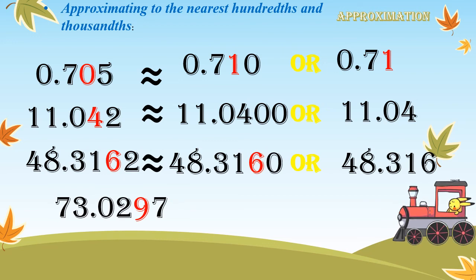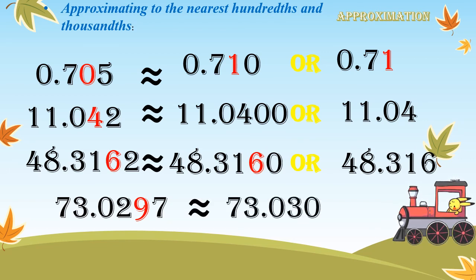The last example: 73 and 2,970 ten-thousandths. I wanted to approximate to the nearest thousandth. What is the number in the thousandths place? Excellent — it's a 9, underline it. Look right next door — it's a 7. Four or less? No — it's five or more, add 1 more. I will add 1 to 9, which gives 10. So I will take 29 together and add 1 — 29 becomes 30. The answer will be 73 and 3,000 ten-thousandths, or seventy-three and thirty thousandths.